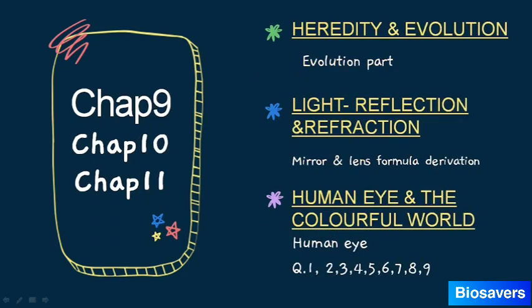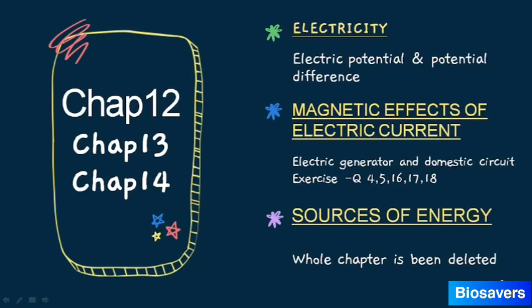In Chapter 9 — Heredity and Evolution — the evolution portion has been deleted. In Chapter 10 — Light: Reflection and Refraction — the derivations of mirror and lens formulae have been deleted. In Chapter 11 — Human Eye and Colourful World — the Human Eye topic itself has been deleted, along with exercise questions 1 through 9, which we do not need to refer to.